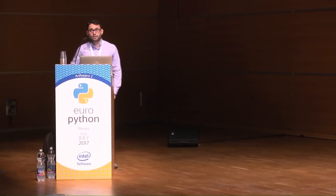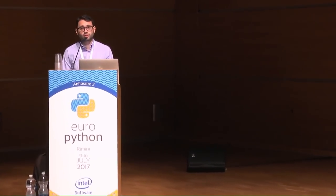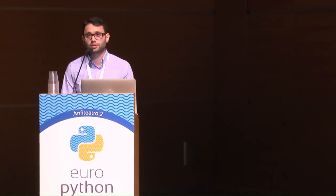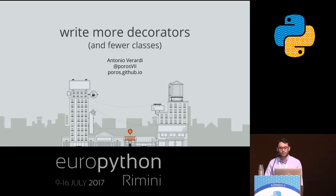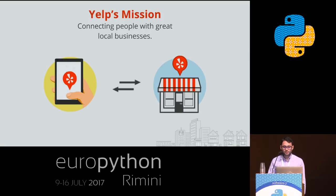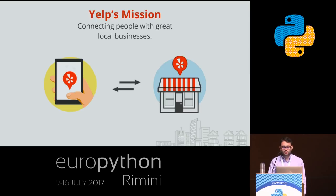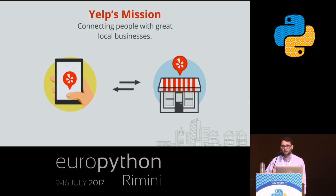Hello. Thank you very much for coming. My name is Antonio. I'm a software engineer at Yelp. I work on the metrics team, so what I currently do is working on observability and real-time metrics and real-time processing. Yelp's mission is to connect people with great local businesses. We have more than 127 million reviews on our website, and on average, every month, we do 26 million unique mobile device accesses via the Yelp web app and 84 million unique visitors via the desktop website. We have offices all over the world, and we are more than 400 engineers working both on the product and the infrastructure.